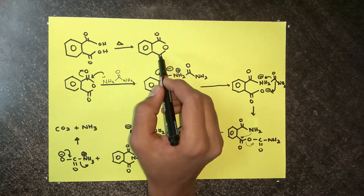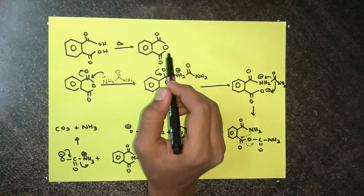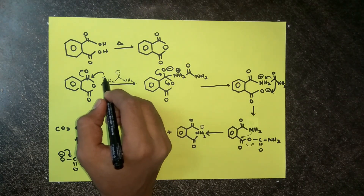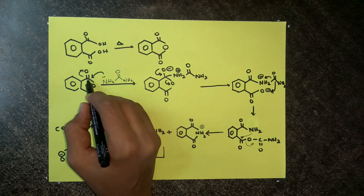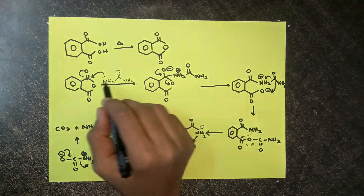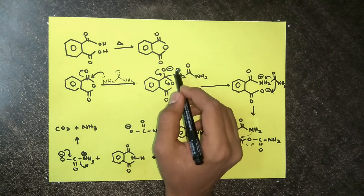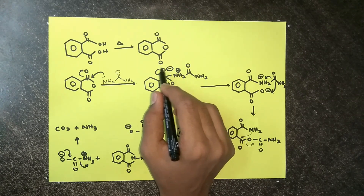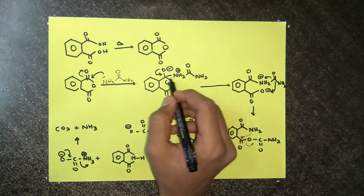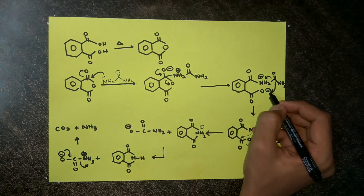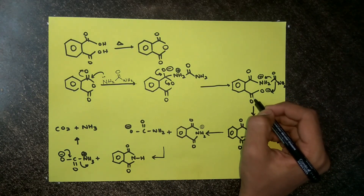The anhydride formed here can also be converted into phthalimide using urea. As urea has got a nitrogen with a lone pair, it's going to act as a good nucleophile and attacks this electrophilic center, pushing the pi electrons towards oxygen, as carbon cannot be pentavalent. Now here, as nitrogen acquired four bonds, it will acquire a positive charge. The oxygen with negative charge is going to reform the pi bond and break this carbon-oxygen bond. This step is possible because the anion formed is pretty stable due to resonance.